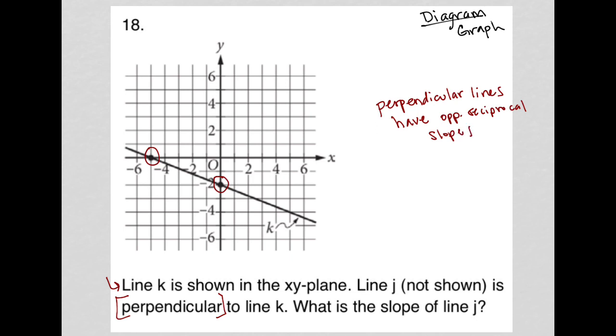So all I need to do is find the slope for line k and then just find the opposite reciprocal of that and I'll have the answer to this question. So the slope here, if I just use simple slope is equal to rise over run, which I think is the easiest way to do this when you have a visual, instead of doing like a y2 minus y1 over x2 minus x1 calculation.